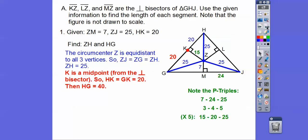New problem, same picture. There are some Pythagorean triples happening here. We have 7, 24, 25 — if they asked for MJ, we could use the Pythagorean theorem or recognize it's a Pythagorean triple 7-24-25, which gives us MJ equals 24. That also gives us GJ equals 48.